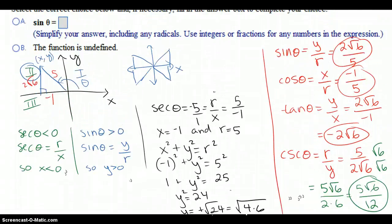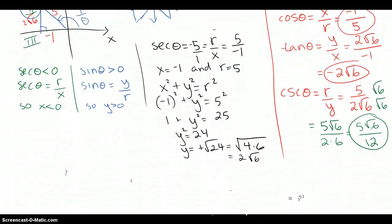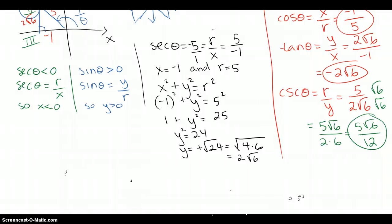What else? Secant, well, we know that's negative 5, so they probably won't ask you that. So the only other one is cotangent. The definition of cotangent is 1 over tangent, so it's x over y.